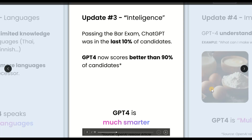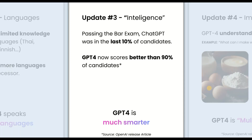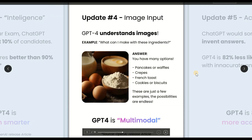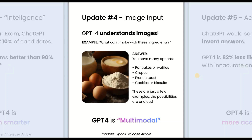The next is intelligence response. ChatGPT-4 now scores better than 90 percent of candidates — for example, it can help with passing the bar exam. That's the level of the improved intelligence response. Additionally, ChatGPT-4 comes with better image input, providing better explanation when given image-based queries.